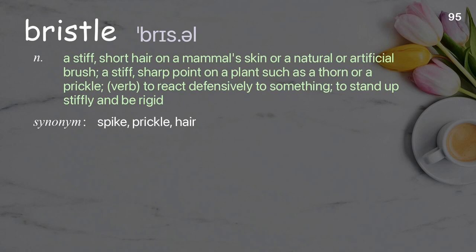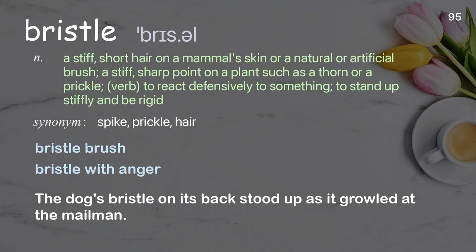Bristle: A stiff, short hair on a mammal's skin or a natural or artificial brush; a stiff, sharp point on a plant, such as a thorn or a prickle; verb, to react defensively to something, to stand up stiffly and be rigid. Examples: bristle with anger. The dog's bristle on its back stood up as it growled at the mailman.